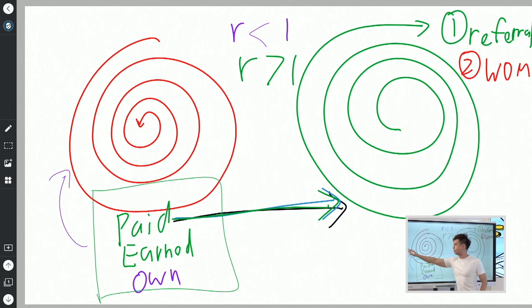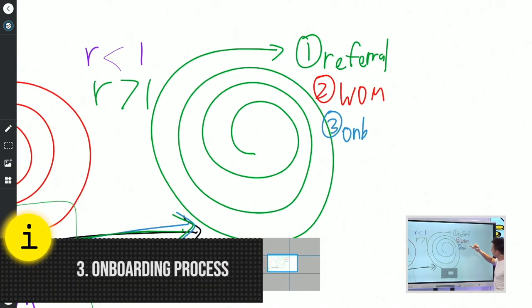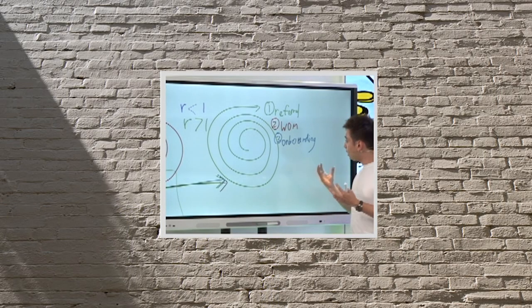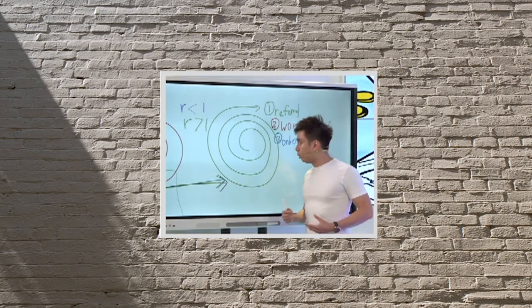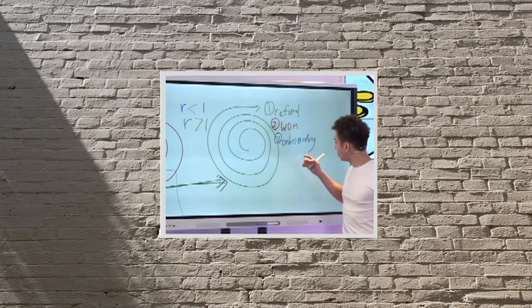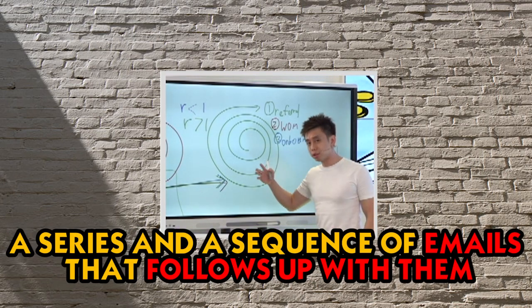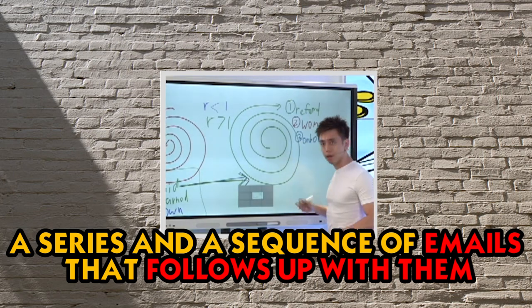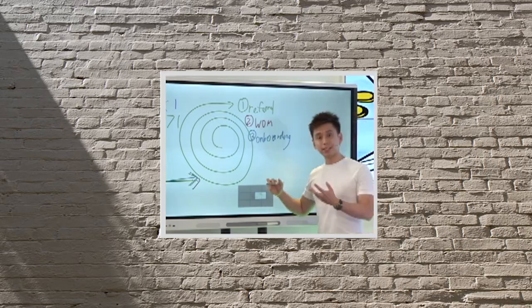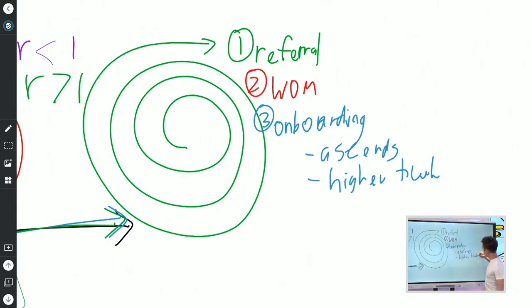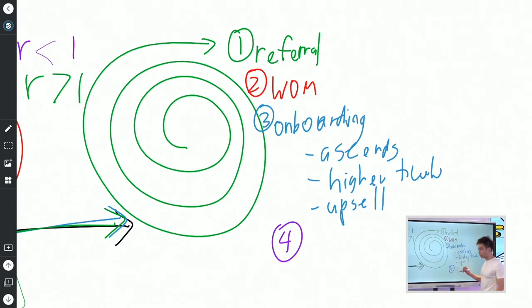Number three is your onboarding process, which doubles down on number two. To get people talking, how can you integrate an onboarding process so that the moment they buy — whether physical, digital, training, course, or virtual event — when they give you their name and email and register, there is a series and sequence of emails that follows up, continues to build and nurture the relationship, builds credibility and trust, continues to add value so that it either ascends them to the next thing, a higher ticket, or an upsell — or, which is number four, does it make sense for them to become an affiliate?